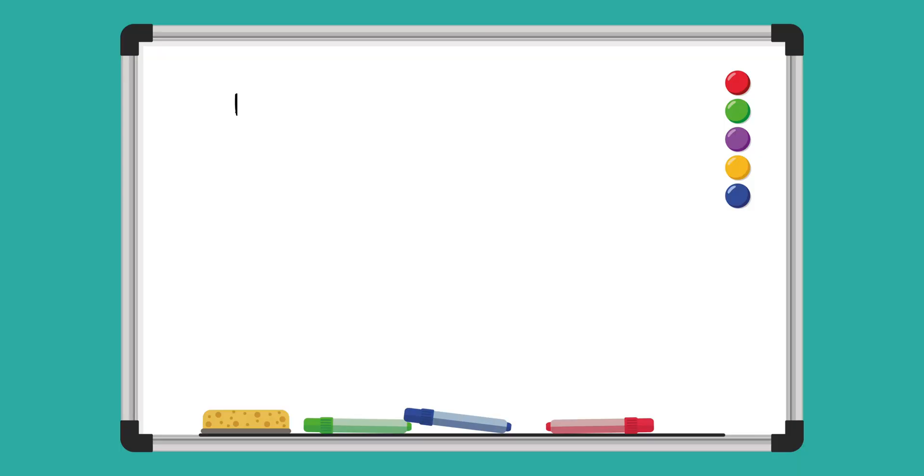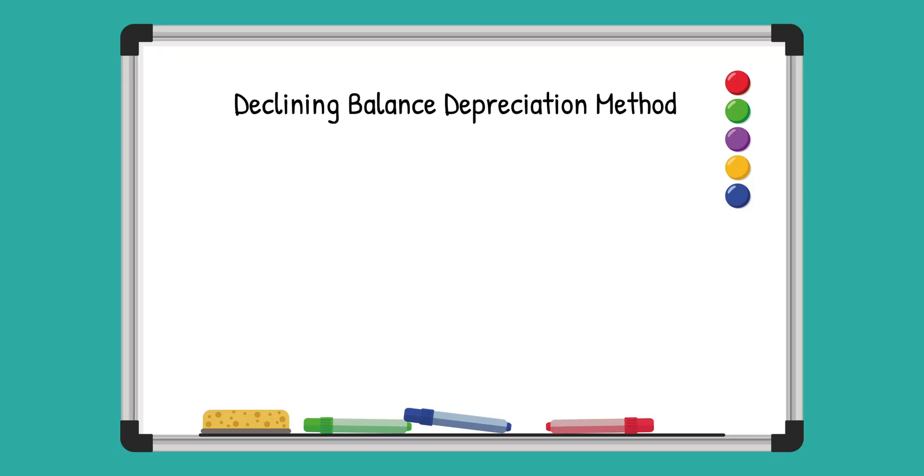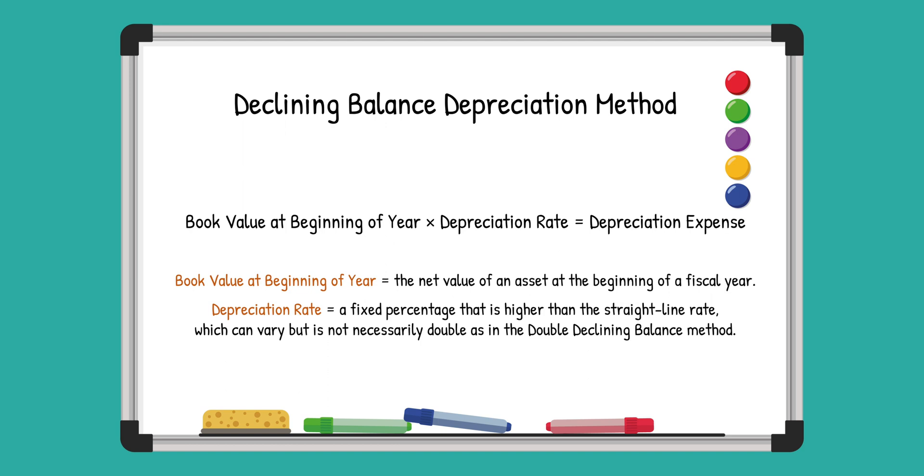The declining balance depreciation method offers a unique perspective on asset depreciation, especially for assets that lose value quickly. In this method, assets depreciate more quickly in the early years of their life, making it a great fit for assets that become outdated fast, like computers, cell phones, and other technology items. Using this method offers larger deductions sooner, making it a smart choice for managing tax liabilities as well.